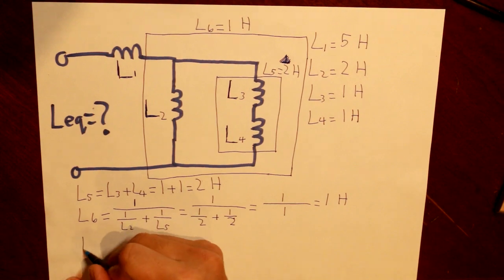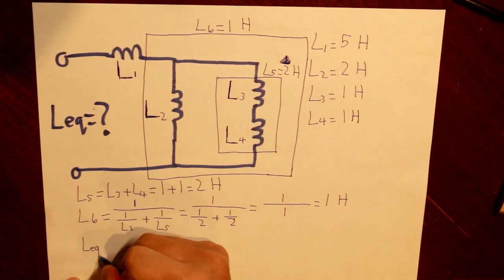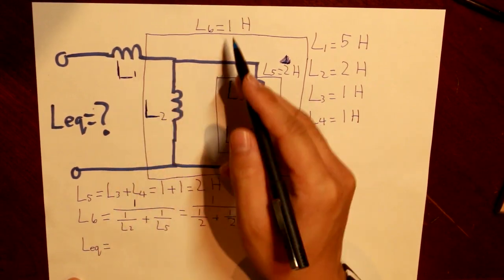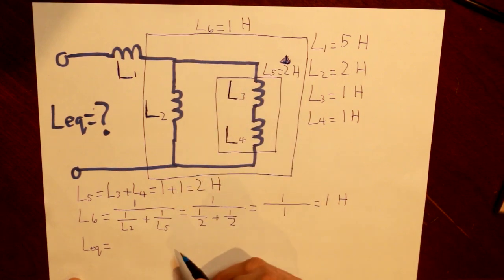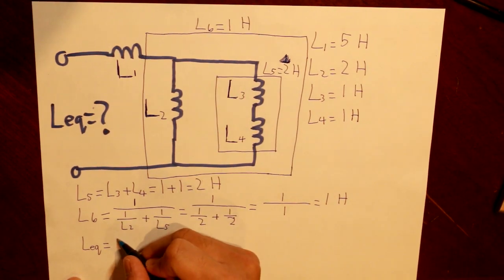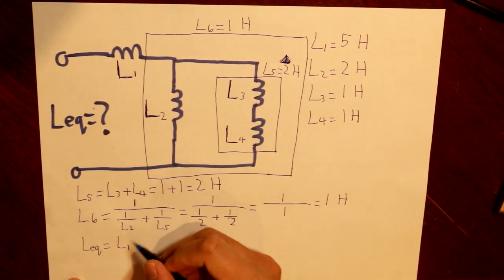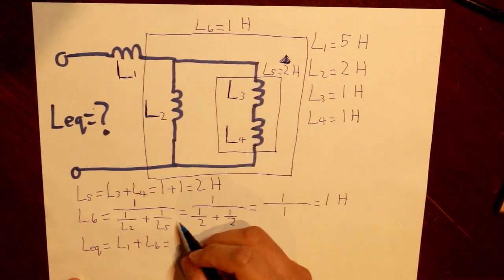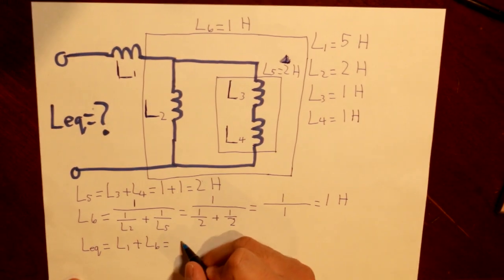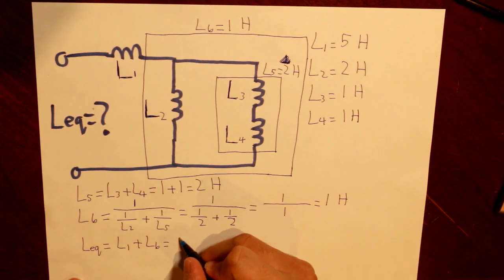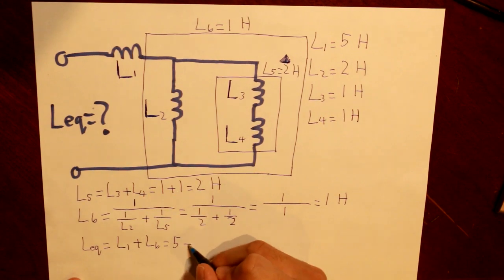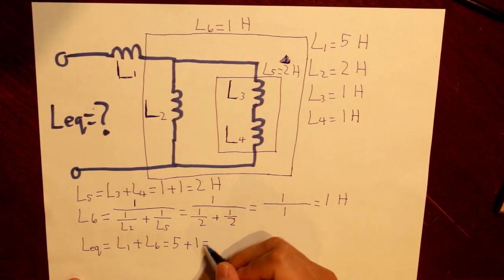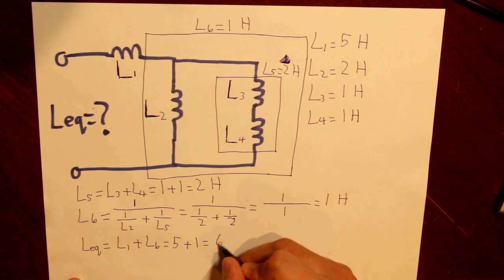To find our equivalent inductance, L1 and L6 are in series. L1 = 5 H and L6 = 1 H, so LEQ = 5 + 1 = 6 H.